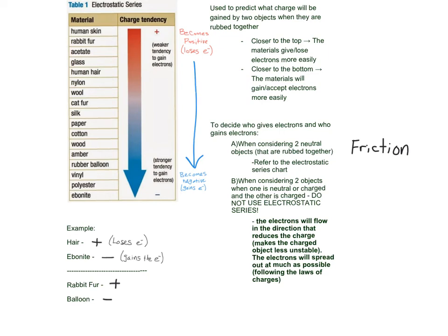This is when we're talking about induction and conduction. The electrons will flow in the direction that reduces the charge. They spread out as much as possible because this allows the object to become less unstable or more stable. To learn more about conduction and induction, watch my next lesson.